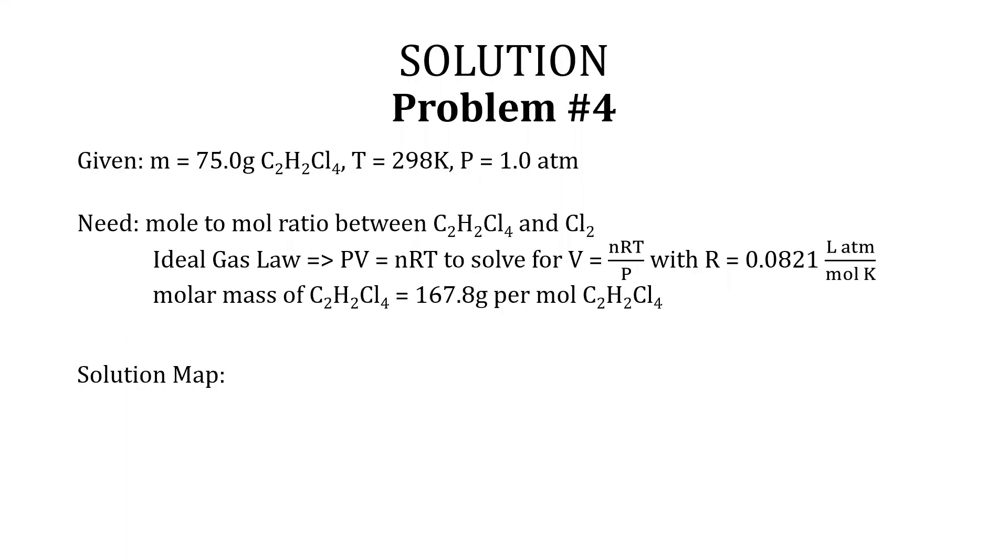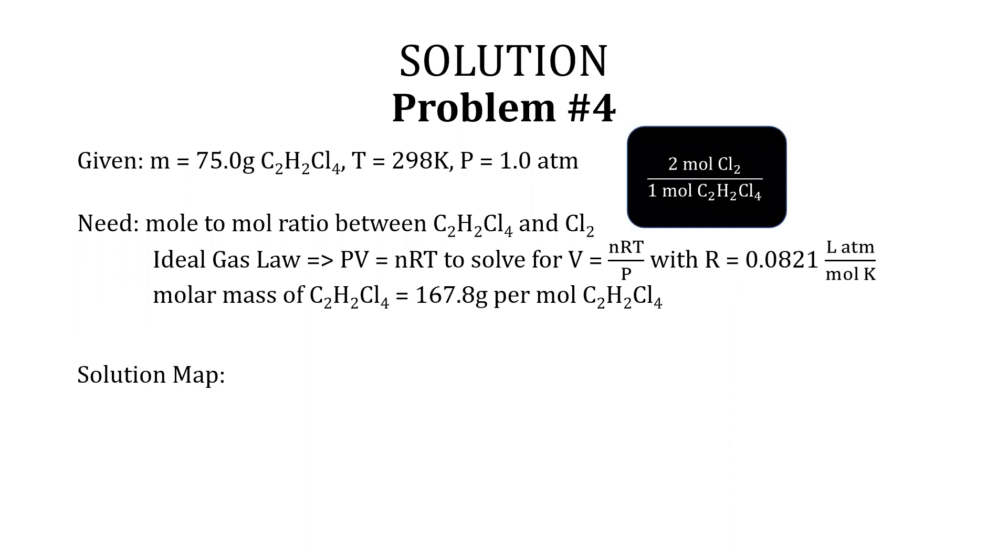It is given that the mass is 75 g of C2H2Cl4, T is 298 Kelvin, and P is 1 atm. One needs the mole ratio between C2H2Cl4 and Cl2, which is 2 moles of Cl2 over 1 mole of C2H2Cl4. Next, the ideal gas equation PV equals nRT is rearranged to solve for V, which equals nRT over P, with R equals 0.0821 L·atm over mol·K. Lastly, the molar mass of C2H2Cl4 is needed, which is 167.8 g per mole of C2H2Cl4.